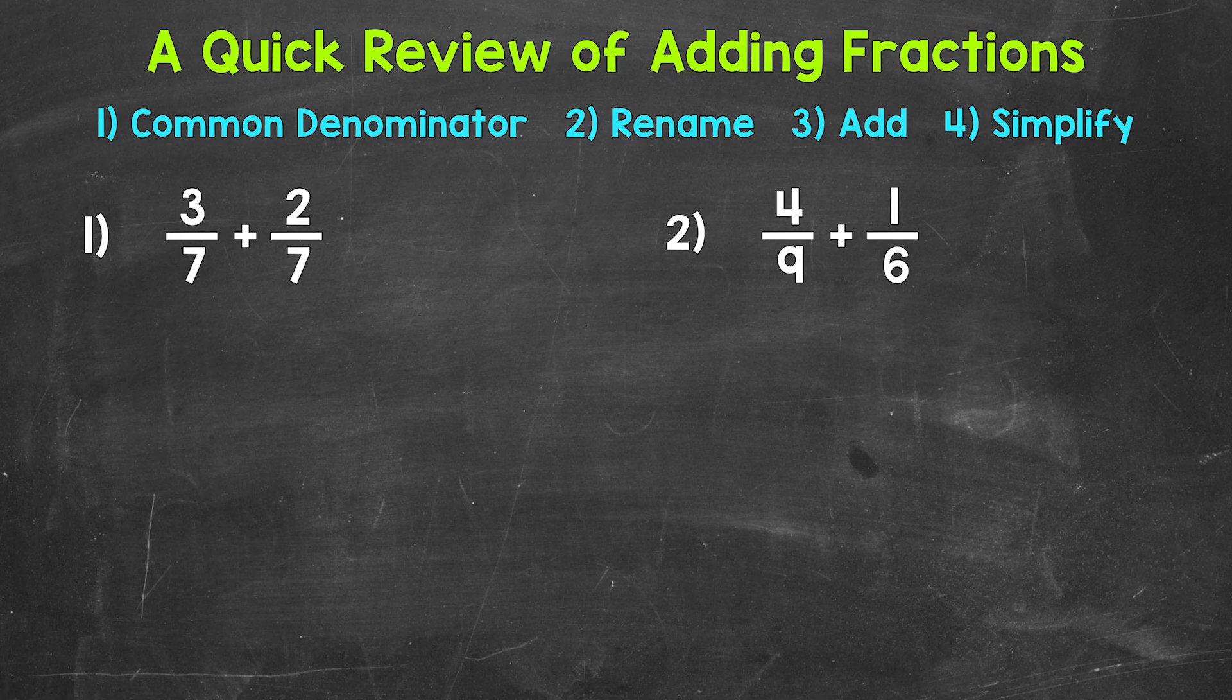Now, when we add fractions, we have to have a common denominator. So we always look to see if our denominators are the same. If they're the same, we can add. So in the case of number 1, we have a 7 and a 7 for our denominator. So we have a common denominator right away.